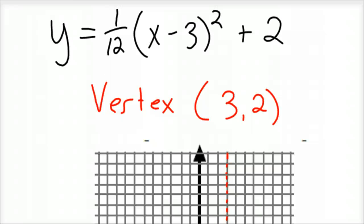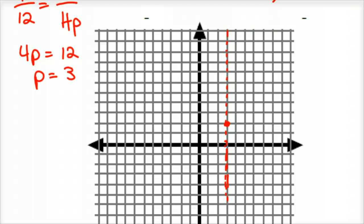The next thing is to find the focus and directrix. That's that 1 over 4p. So I know 1/12 is the same as 1 over 4p. You cross multiply, 4p equals 12. So I know my distance to the focus is 3 from my vertex. You go up 3, and that is my focus. Then you go down 3, and that is my directrix. Here is my directrix line.